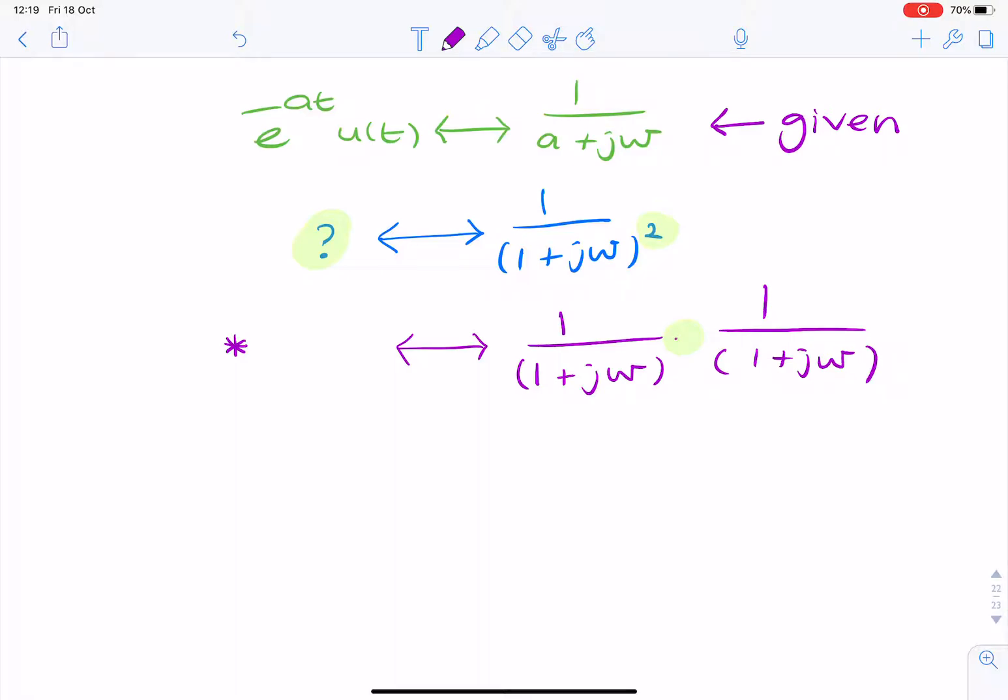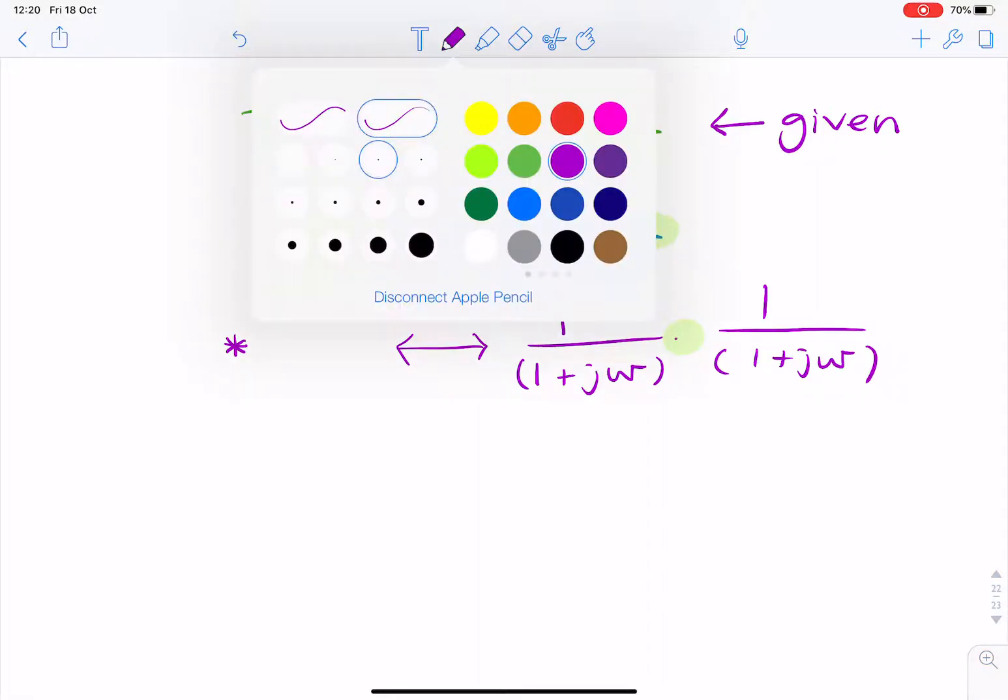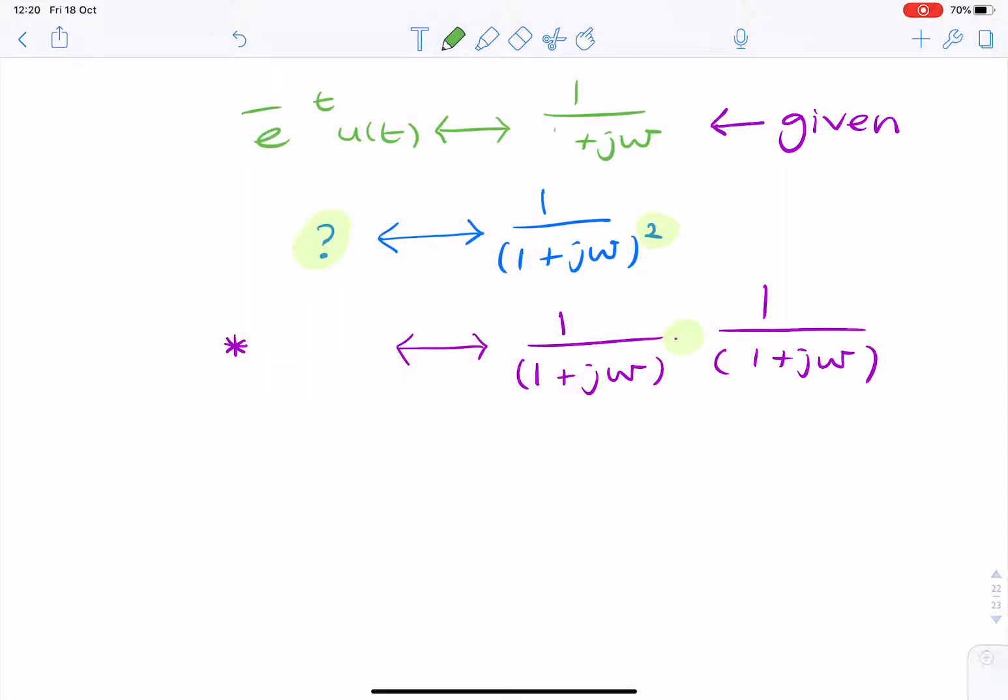So, if we look back at the pair, the Fourier pair we have, it looks very similar, but that a we can replace with a number 1. So, we can do that. So, that would be a 1 here. And the time domain function would therefore be e to the minus t u of t convolved with itself.